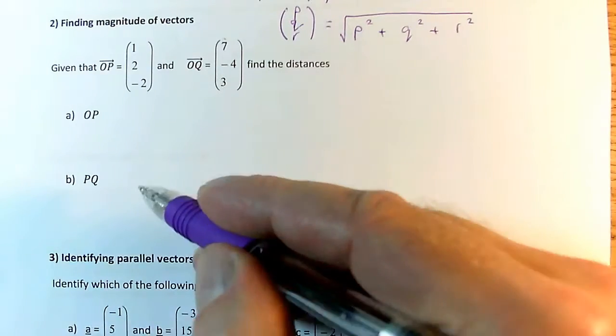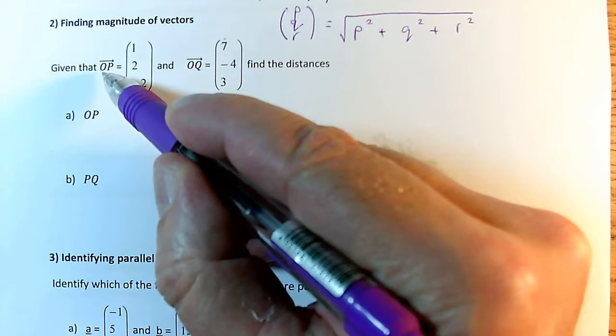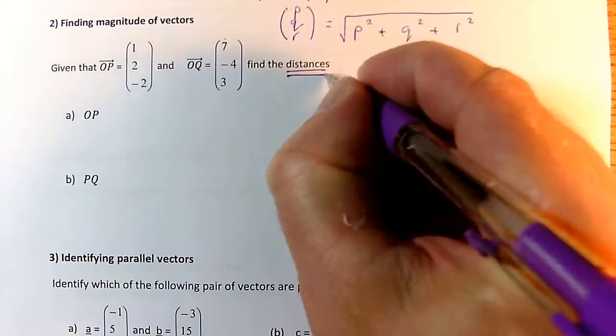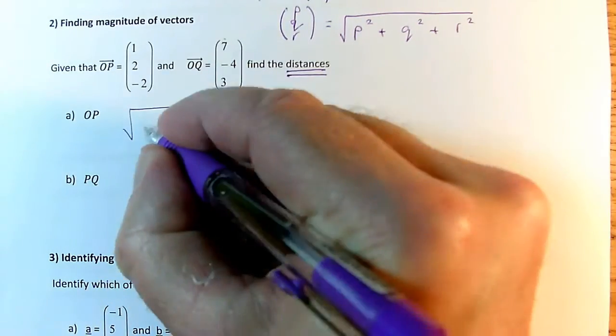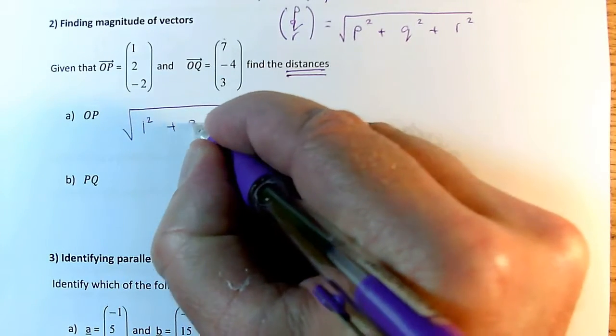So if I put that into practice, the first thing I've got to do is find OP. Now this has got the arrow, that means it's the vector from O to P. OP is a distance. So I have to take this vector here, and I have to Pythagoras it. So I have to do a square root. I have to do the square root of 1 squared. First thing is 1, and the second thing is 2, so plus 2 squared.